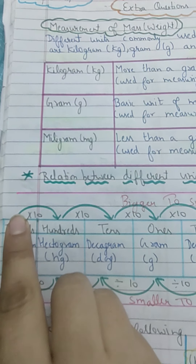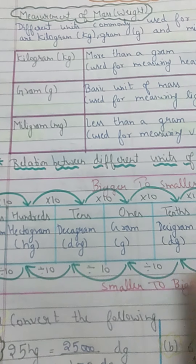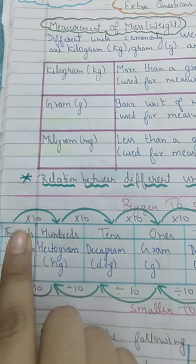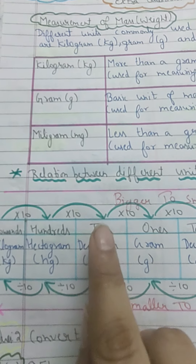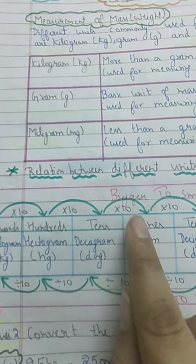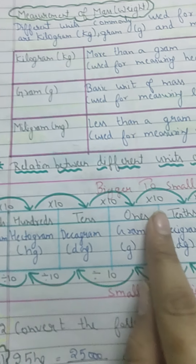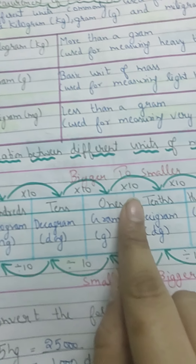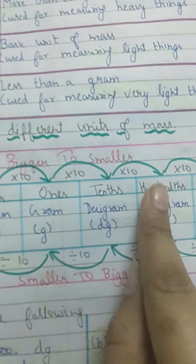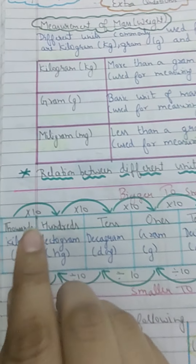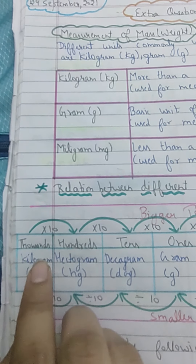Now the same conversion concept applies: when going from bigger to smaller, one jump equals 10, two jumps equals 100, three jumps equals 1,000, four jumps equals 10,000, and five jumps equals 1,00,000 (one lakh).